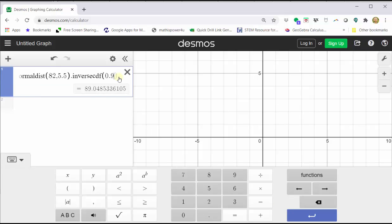And the test score that corresponds to the 90th percentile shows below, which is approximately 89.05. Let's click in cell two and verify this.